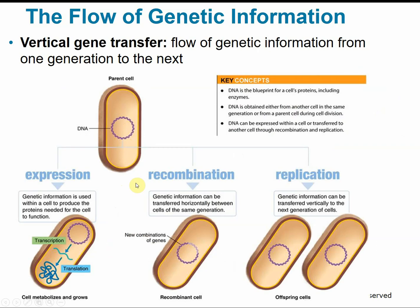The flow of genetic information can go two directions. Vertical gene transfer moves genetic information from one generation to the next — a parent cell produces an offspring cell with that same genetic code, like a family tree. Horizontal gene transfer moves genetic information between neighboring cells — possibly unrelated cells in the same environment that exchange genetic material. With vertical transfer, all offspring should receive identical chromosomes; with horizontal transfer, we may have recombination and new combinations of genes.